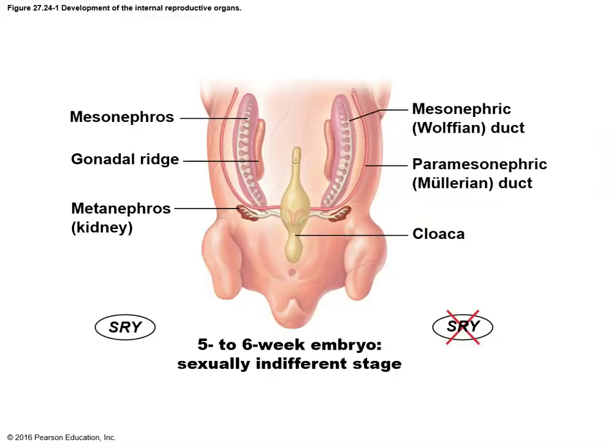Let's think about a baby once it is growing inside the mother. This is a five to six week old embryo. At this point it sort of looks like a chicken you'd buy at the grocery store — and quite frankly, at that stage of development, developing humans and a developing chicken would look about the same, as would a developing rat or dog or any other mammal. So at this point we see the sexually indifferent stage.